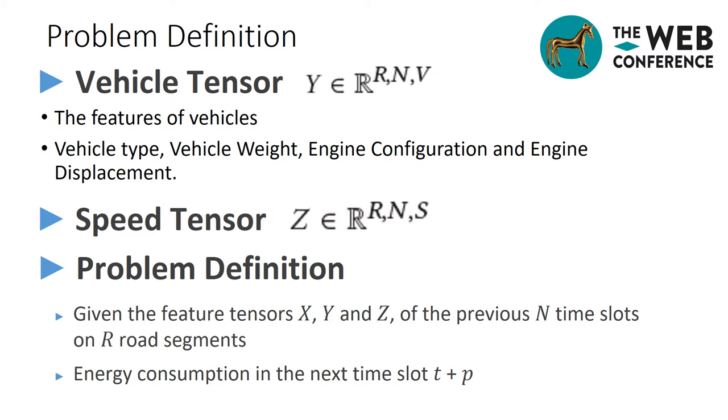Each energy consumption data in the tensor X is given by a vehicle recorded in the tensor Y. In addition, since the energy consumption is directly affected by the speed, we use also a three-dimensional tensor Z, recording the speed S for all road segments over N time slots. Our goal is, given the feature tensors X, Y, and Z, to predict the energy consumption for all the regions in a city in the next time slot T plus P, where P is the number of time slots to be predicted. This helps to make the decision about choosing the trip trajectory based not only on distance or travel time, but also on energy consumption.